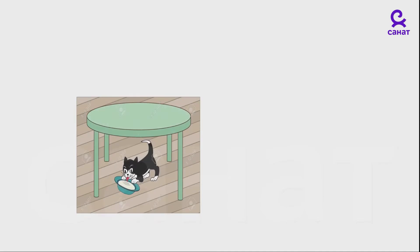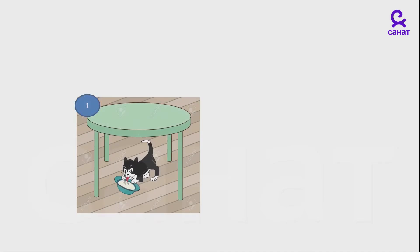Look at the first picture. Can you tell me where the cat is? Is it on the table? No. Is it next to the table? No, it's right under the table. Now, cross out three letters from the end of the word 'under'. So, what are you left with? Correct. U-N.